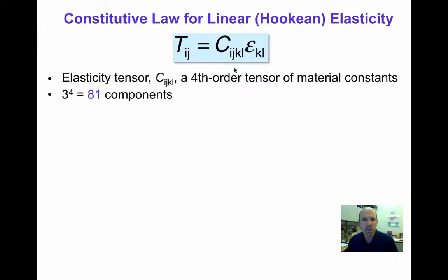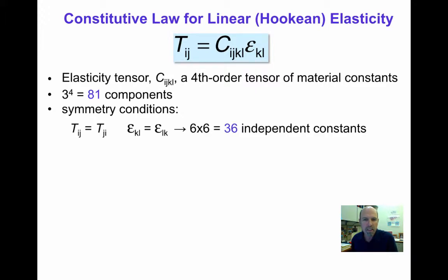There are a total of 81 components of the elasticity tensor, but by considering the symmetry of the stress and the strain, we conclude that at most 36 of these can be different, because there are really only six independent stresses and six independent strains, giving a total of 36 independent constants.